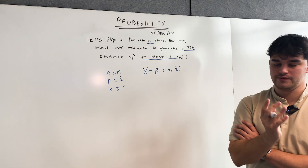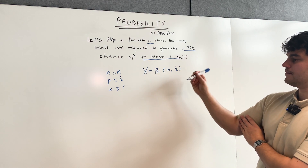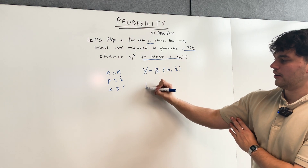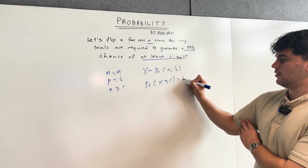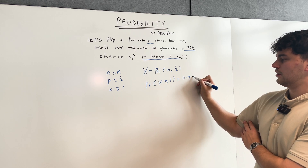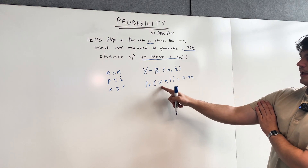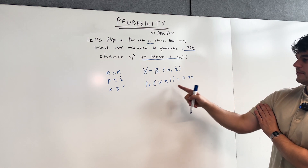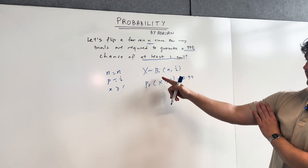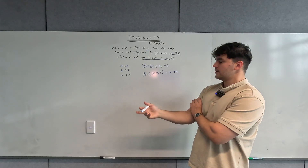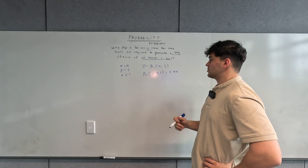We're going to work things in terms of n. What we do from here is say the probability of x being greater or equal to one is equal to 0.99. The probability that we have at least one tail being flipped is 0.99, according to this distribution. But the only problem is we don't know n — that's what we're actually trying to solve for in this question.